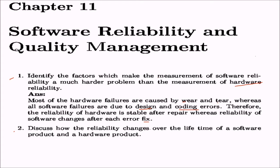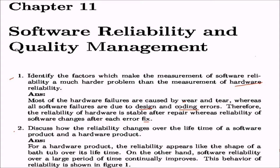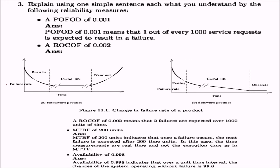Second: discuss how the reliability changes over the lifetime of a software product and a hardware product. For a hardware product, the reliability appears like the shape of a bathtub — this is the bathtub curve over its lifetime. The software reliability over a large period of time continuously improves rather than degrading. Looking at the diagram, the hardware product has failure rate on the Y axis and time on the X axis. This is how the bathtub is seen — there is a useful life, then wearing out starts and may reach some peak, after which the product may not be usable.